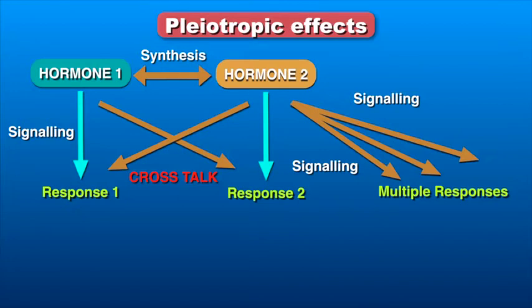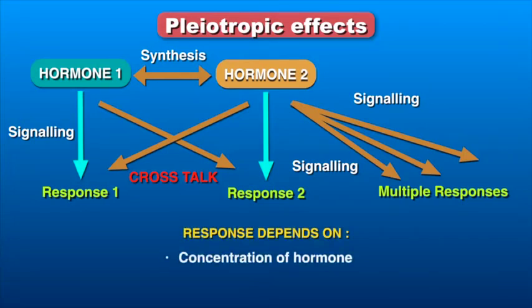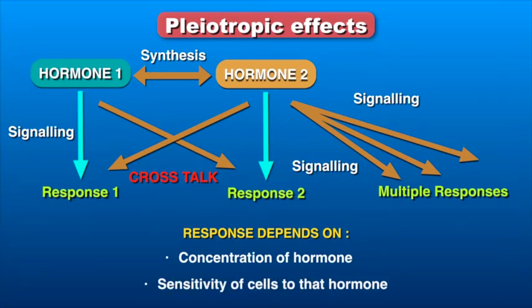Cells also differ in their ability to sense hormones. The response of a plant cell or tissue therefore depends both on the concentration of the hormone as well as the sensitivity of the cell to that hormone. Genetic screens for hormone insensitivity, in spite of excess hormone availability, led to isolation of mutants defective in hormone signaling, enabling identification of hormone receptors and signaling intermediates.